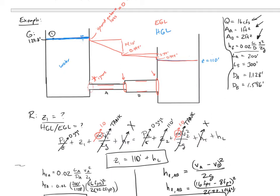The HGL runs parallel to the EGL within each pipe section, just offset downward by the velocity head v² / 2g. From any point in the system you can read off z (elevation), p/γ (from z up to the HGL), and v² / 2g (from the HGL up to the EGL).